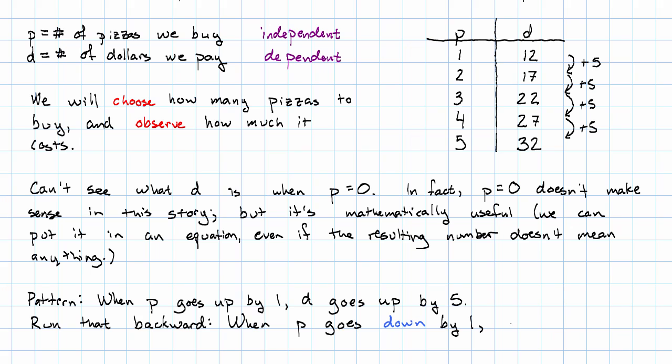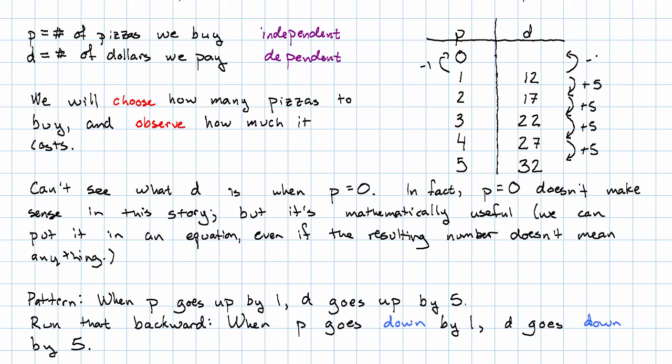I can use that information to add a row to my table. If p goes down by one, d goes down by five, twelve minus five is seven. So we see that when p is zero, d is seven.